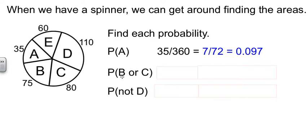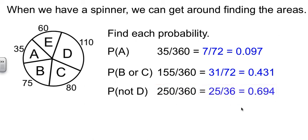Well, the probability of being in B or C, well, B or C is this whole zone. That's going to be 155 degrees out of the whole 360. That reduces to 31/72, or the equivalent decimal. Then they like to throw this idea at you: not D. Anything but D. Well, D is 110 degrees. If D is 110 degrees, that means everything else is 250. And that reduces to 25/36, which gives you another decimal.